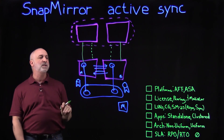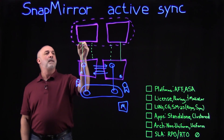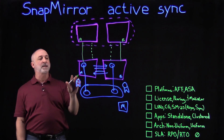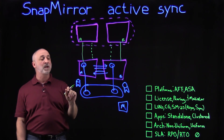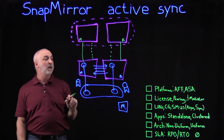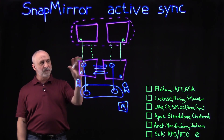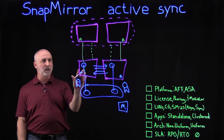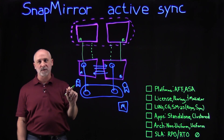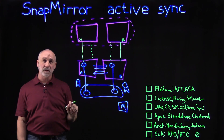We now have hosts on the other side that are connected to our clusters. Host A is protected and talking to cluster A for our storage. Host B is talking to our storage cluster at site B. This is deployed in a non-uniform architecture, where the host at site A only talks to the storage at site A, and the host at site B only talks to the storage at site B.